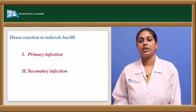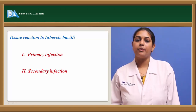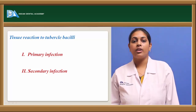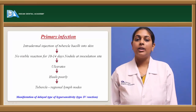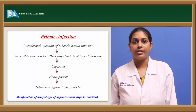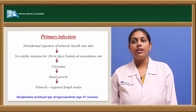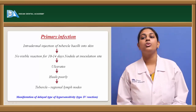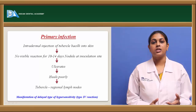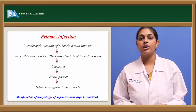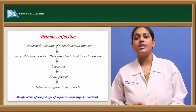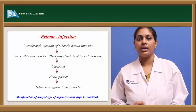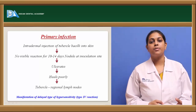Coming to tissue reaction to tuberculosis bacilli, it is of two phases: primary and secondary infection. In primary infection, when tuberculin is injected intradermally, there is no visible reaction within 10 to 14 days. But later at the inoculation site, after 10 to 14 days, a nodule may develop if the patient contains the pathogenic strain of tuberculosis bacilli.